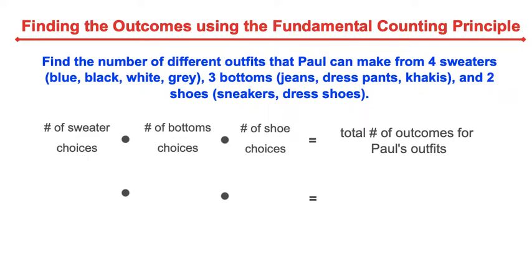So here we have a question. Find the number of different outfits that Paul can make from four sweaters in colors blue, black, white, and gray, three bottoms — jeans, dress pants, and khakis — and two shoes: sneakers and dress shoes.